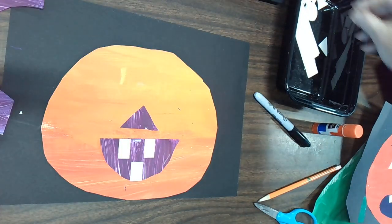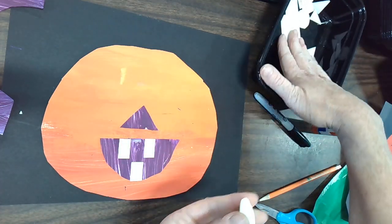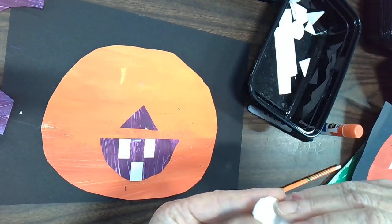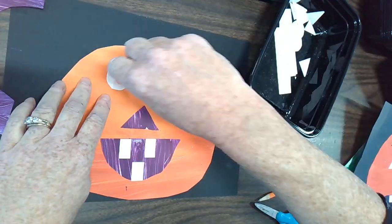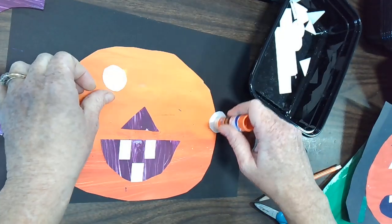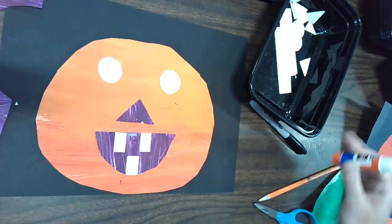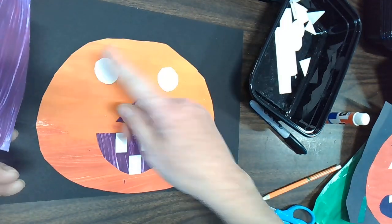Then for my eyes, to make these eyes really stand out, I'm going to choose a few shapes from my bin first. So I'm going to choose these two circles and I'm going to glue those down first for my eyes.